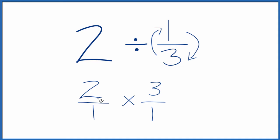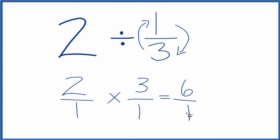So two times three over one, and now we can just multiply. Two times three, that equals six. And one times one, that equals one. So we end up with six over one, which is just six.